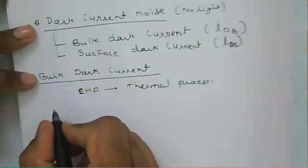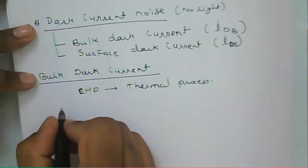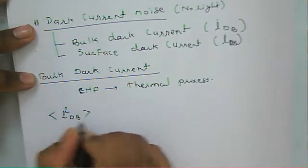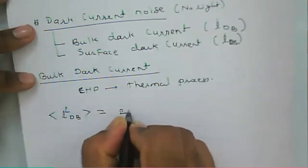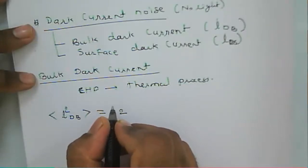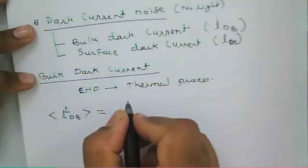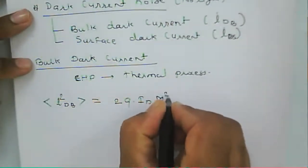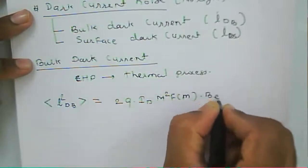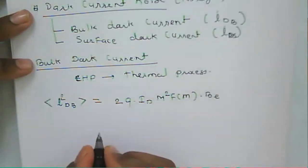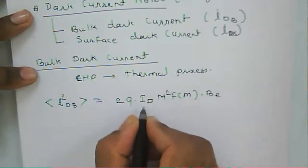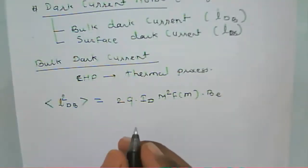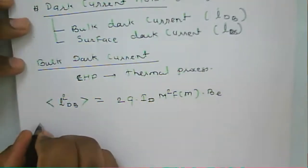The equation for bulk dark current in terms of mean square value is: i²_db = 2q·I_d·M²·F(M)·B, where M and F(M) are factors for the avalanche photodiode, and I_d is the diode current propagating through the device when there is no light.